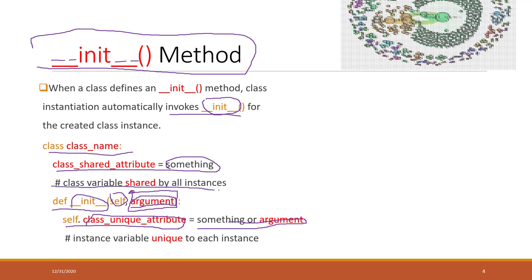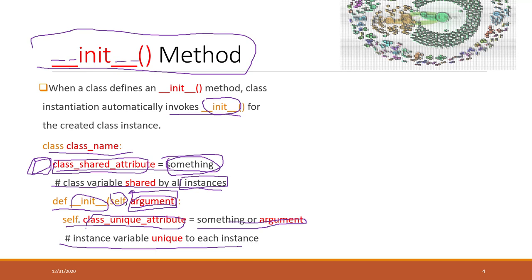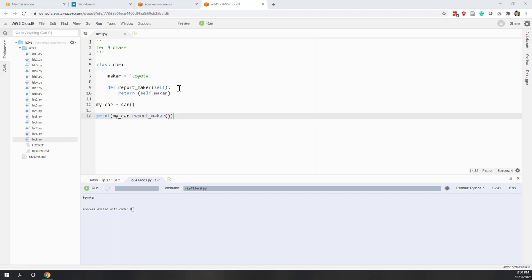You can also see in the comments: the attributes defined outside this method are shared by all instances — all objects created from this class will have this common attribute. However, the attributes defined within the method, for example here in this initial method, are values unique to — or rather, assigned to — each instance. Because when you create an object, you have to provide what that argument will be.